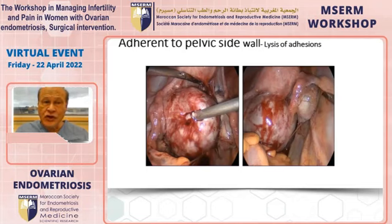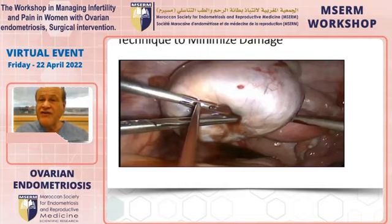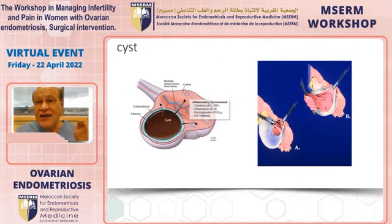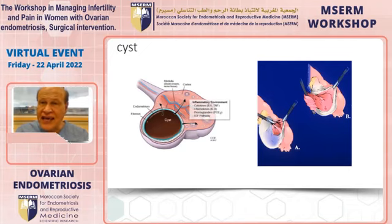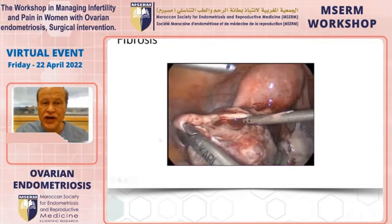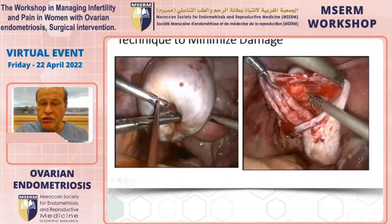During surgery, adhesions are lysed, the cyst will often rupture, and then dissection begins — the most complicated part. The cyst is firmly adherent to blood vessels at the hilum, and when the cyst is pulled, bleeding can occur there. Use of electrosurgery to control that bleeding can also damage the ovary. To minimize damage, vasopressin can be injected under the cortex to decrease bleeding, and studies show no significant change in FSH, antral follicle count, or ovarian reserve with this approach.